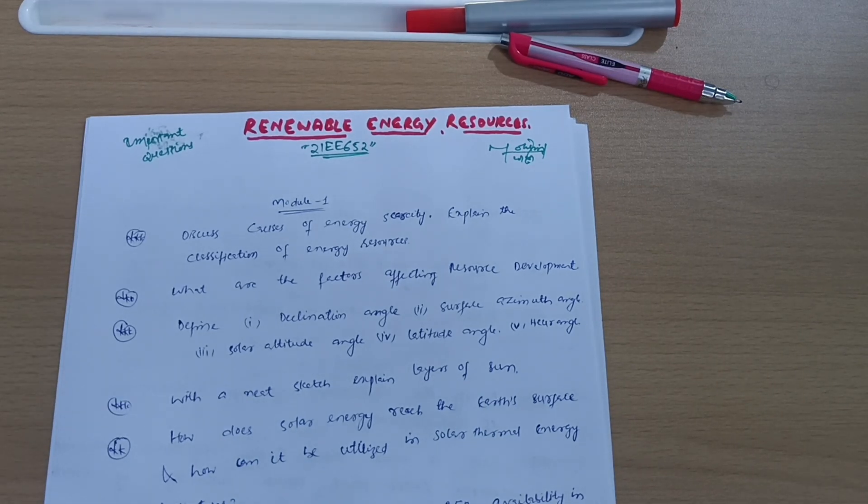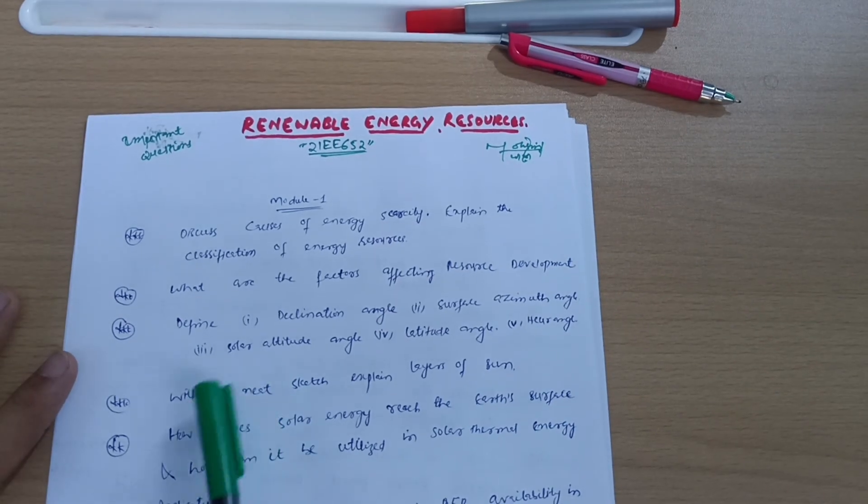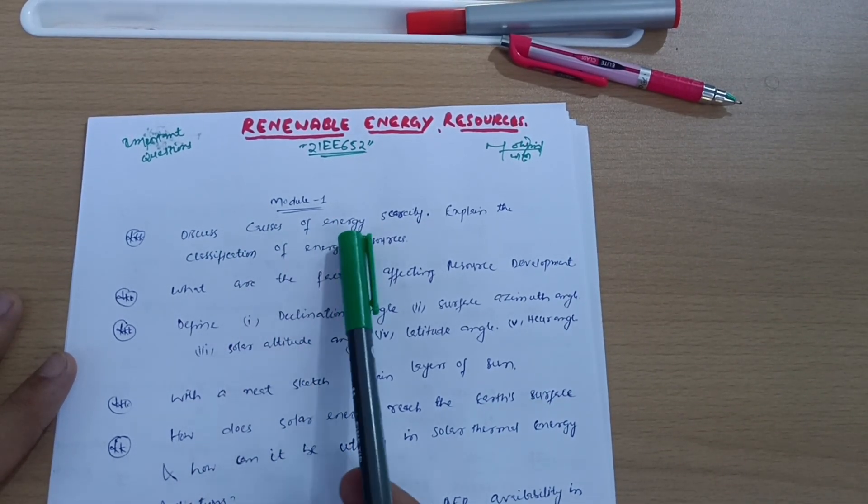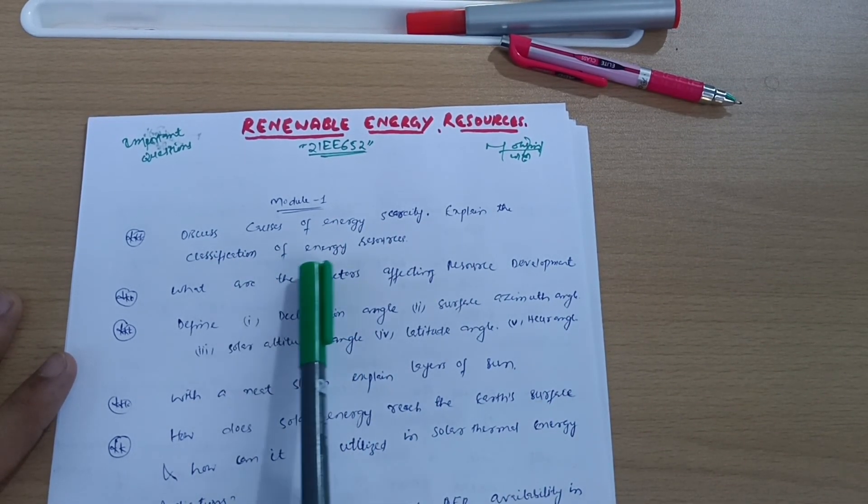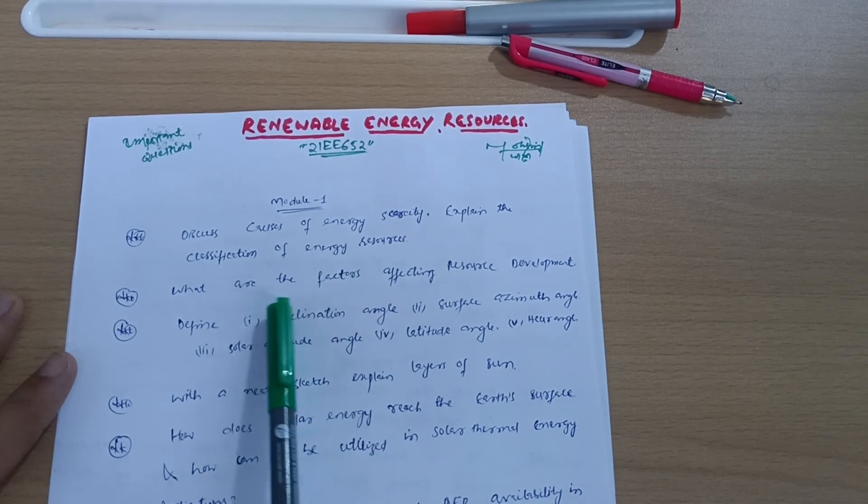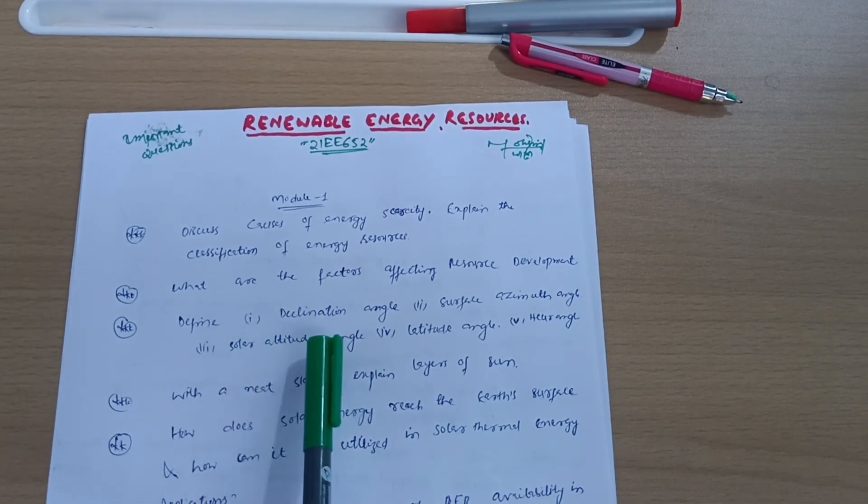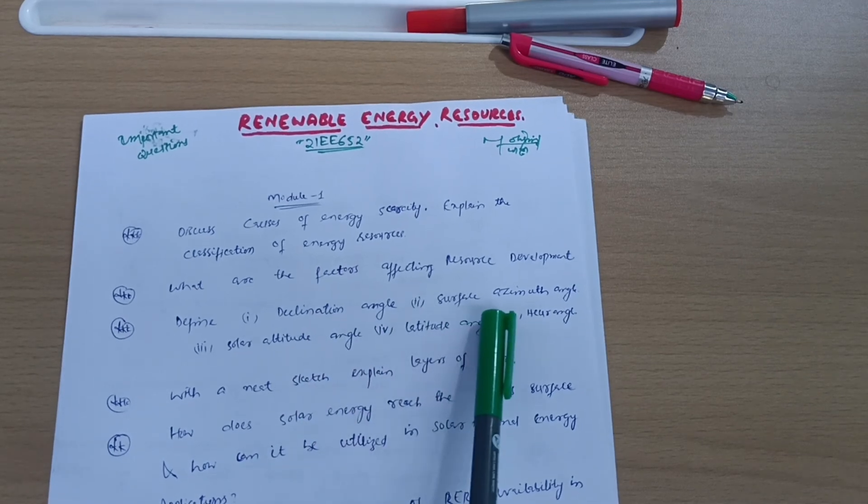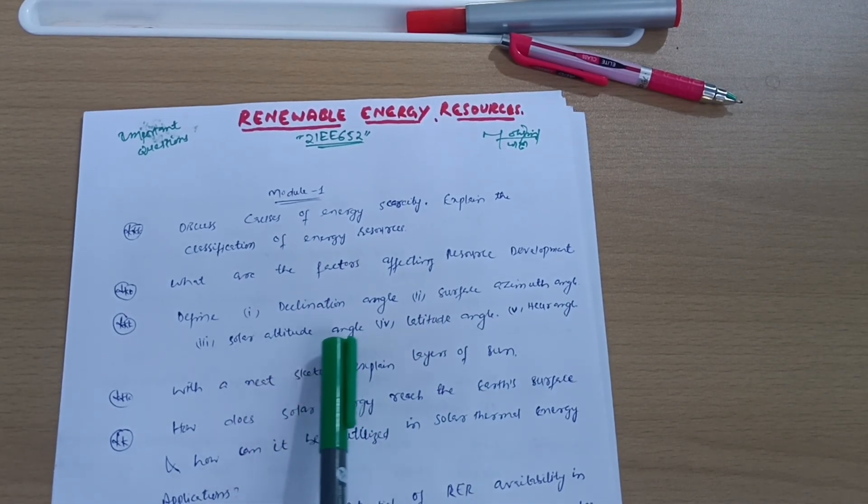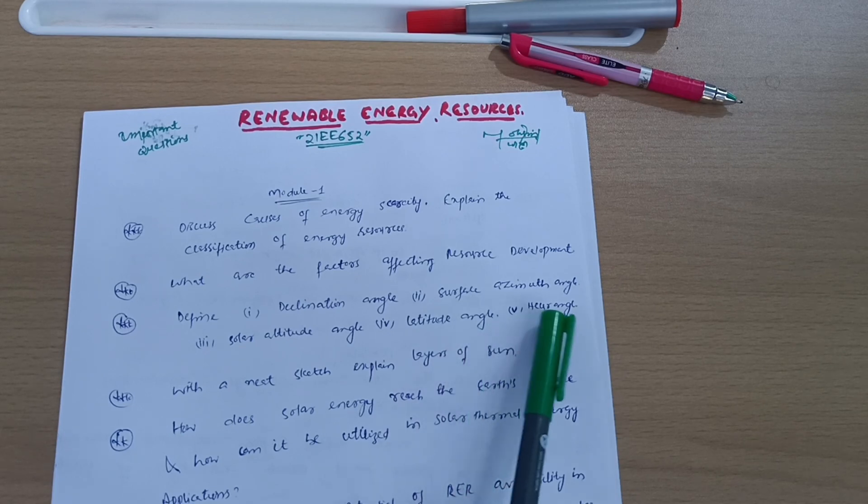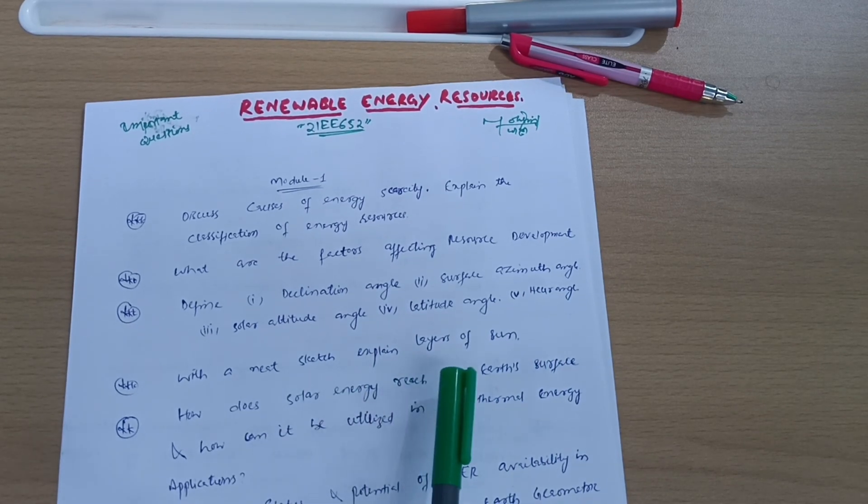Module-wise, we have six questions from Module 1: Discuss causes of energy scarcity. Explain the classification of energy resources. What are the factors affecting resource development? Define the following: declination angle, surface azimuth angle, solar altitude angle, latitude angle, and hour angle.